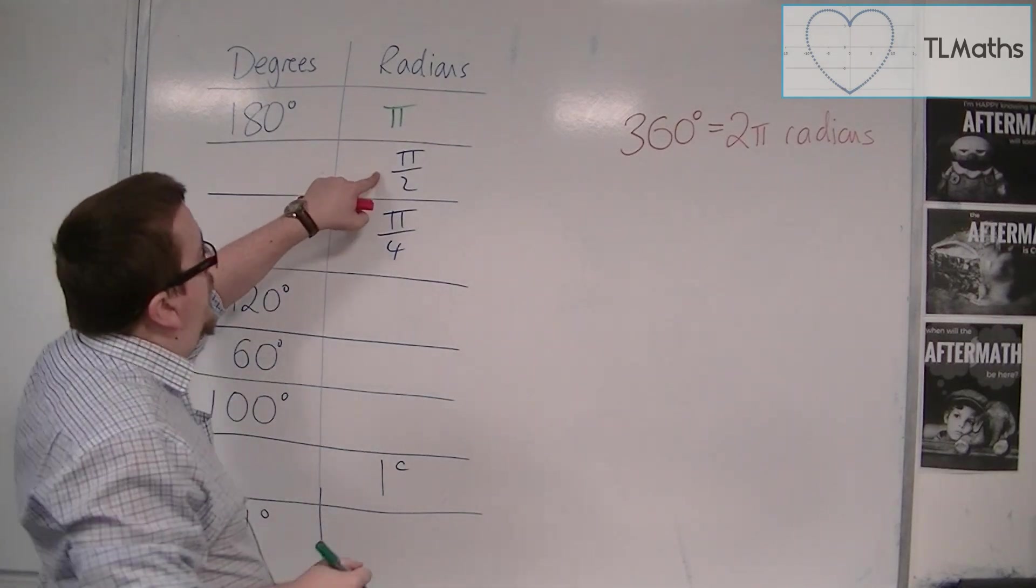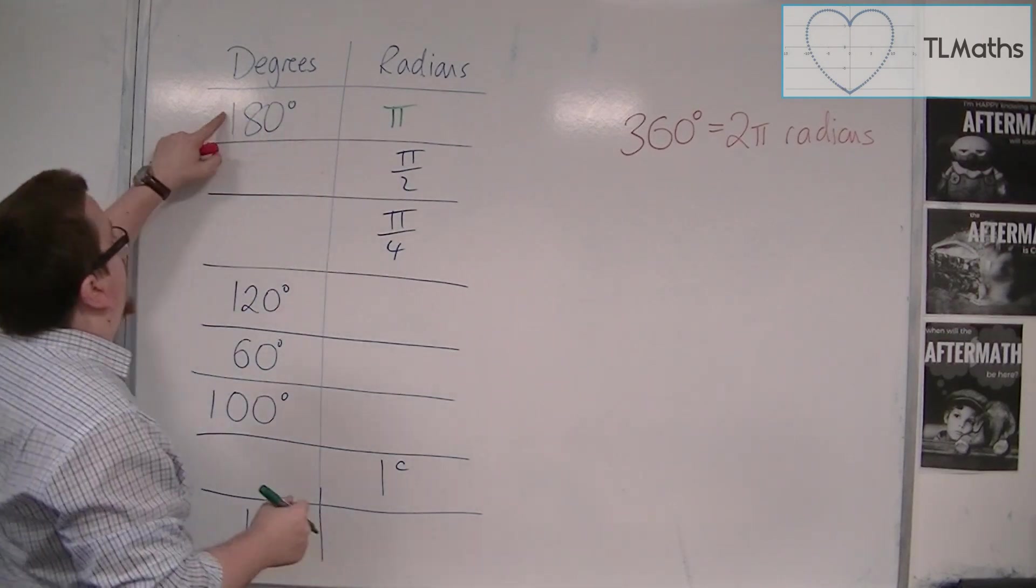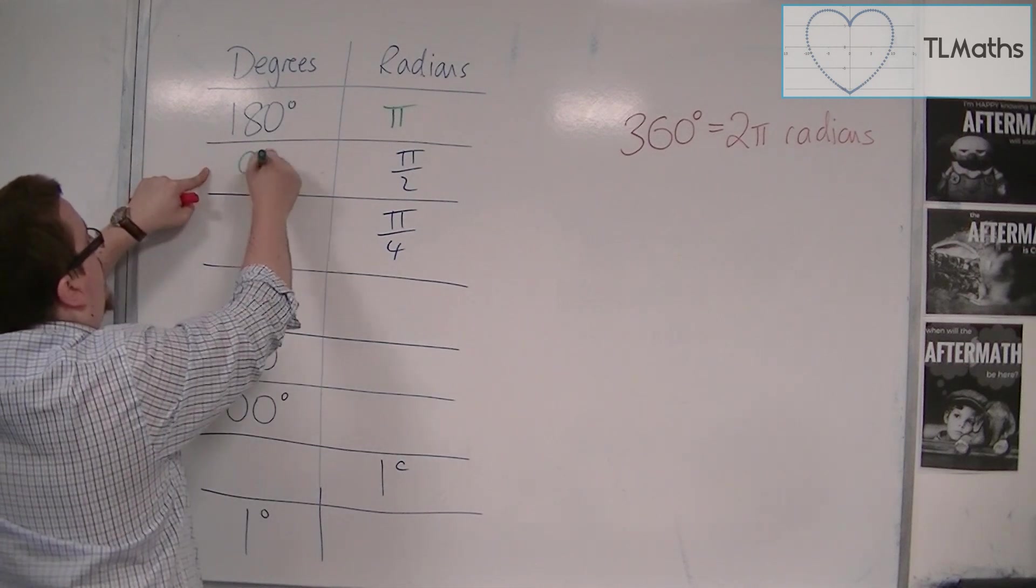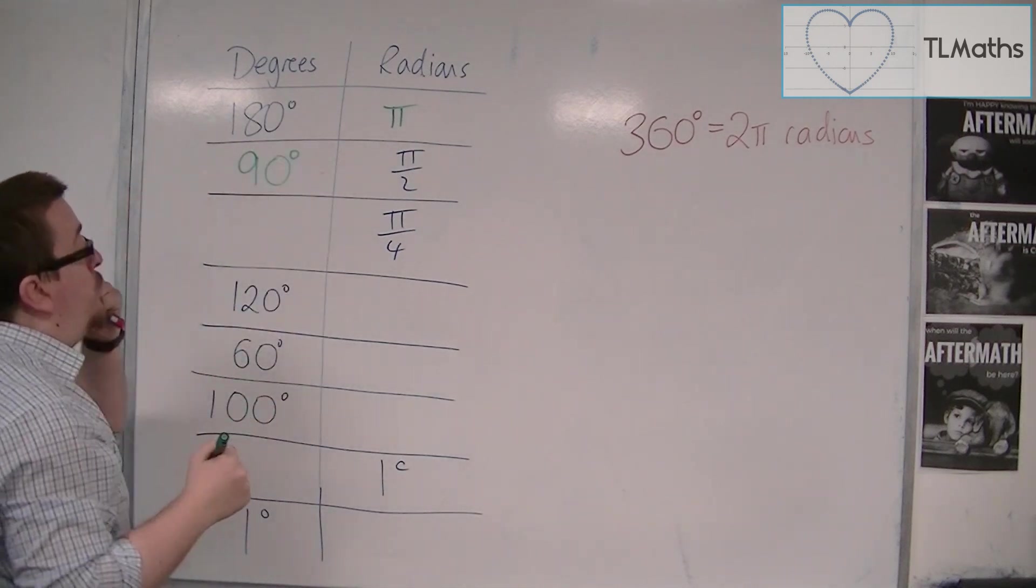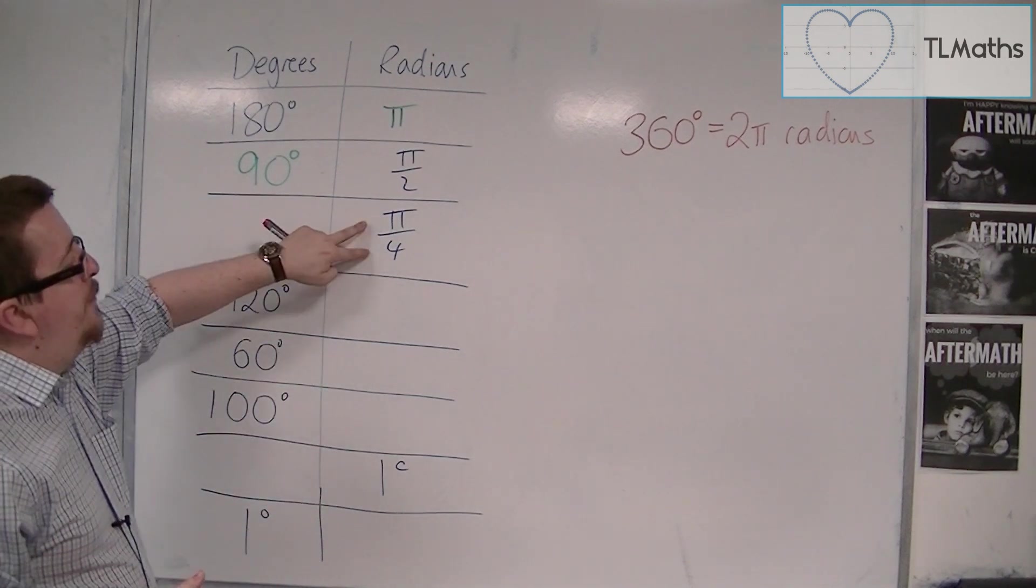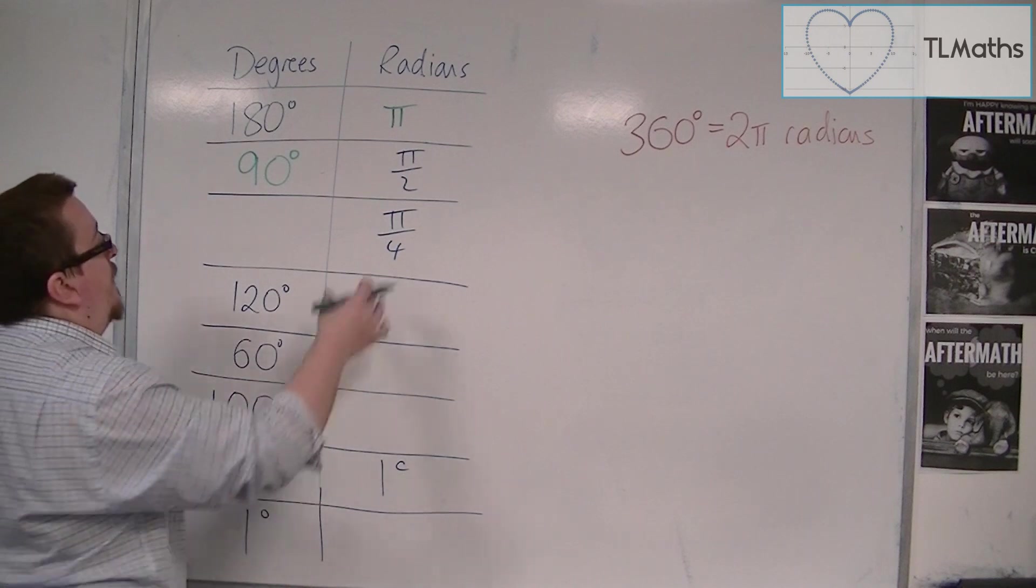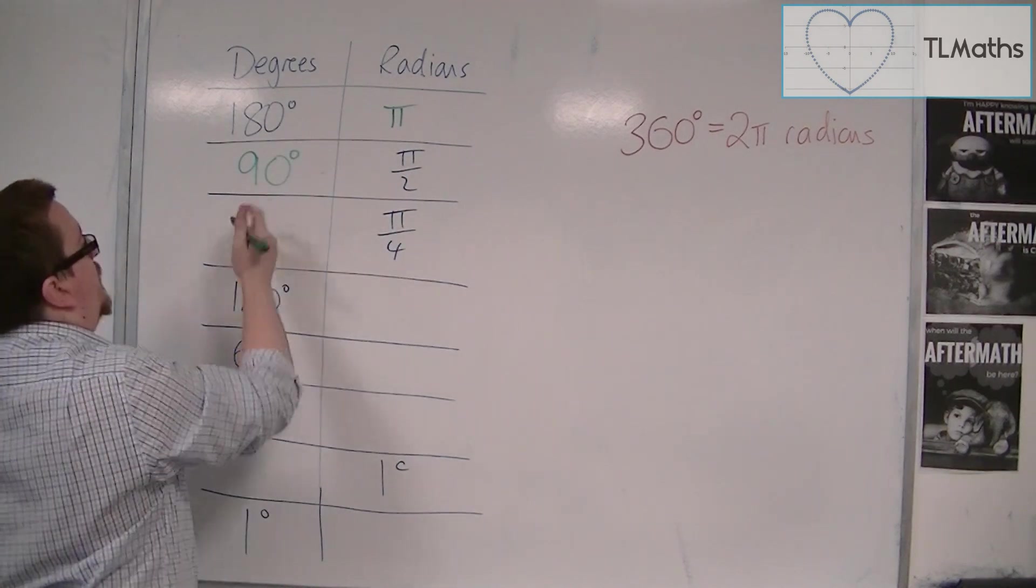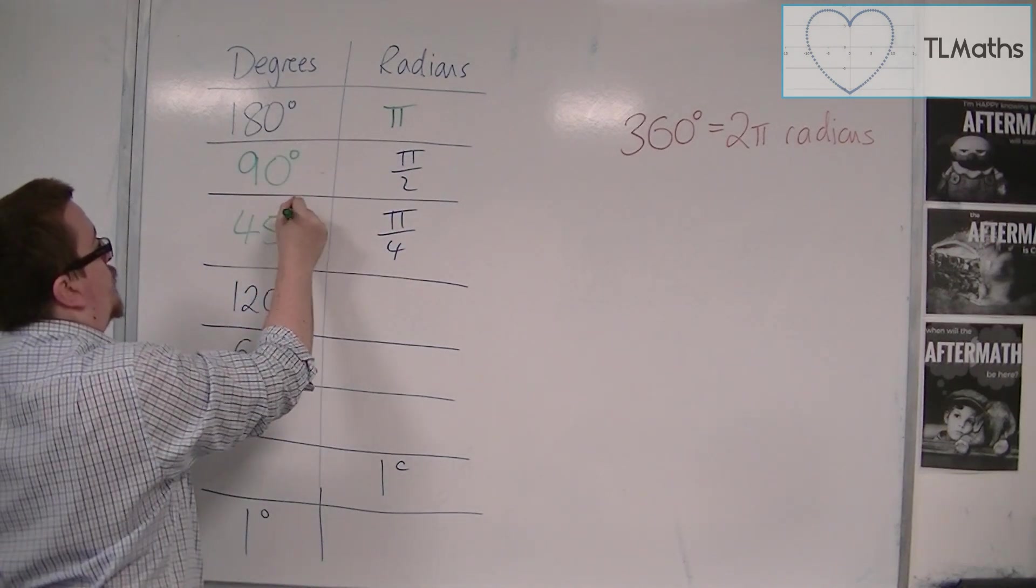Pi over 2, I'm dividing by 2, and so I'm dividing this by 2, so this would be 90 degrees. So, 90 degrees represents pi over 2 radians. Pi over 4, I'm dividing by 2 again, so I'm finding a quarter of pi, so that would be 45 degrees.